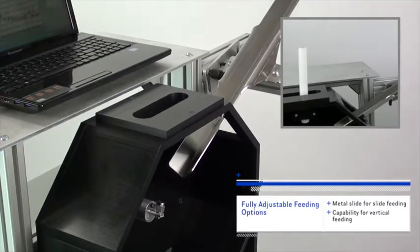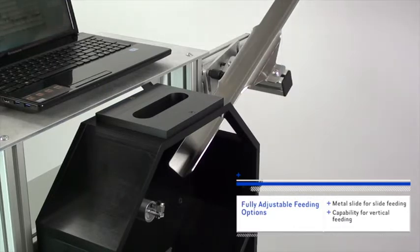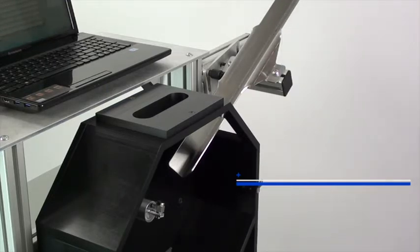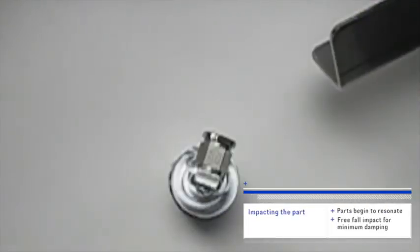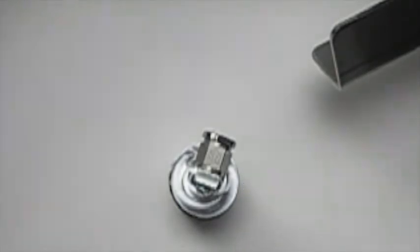Both can be integrated into your automated production system with bowl feeders or vibratory tables. A fully adjustable metal slide accommodates different angles for the optimal part drop onto the unit's built-in sensor, and a vertical feeding tube controls the descent of extremely small parts directly onto the sensor.